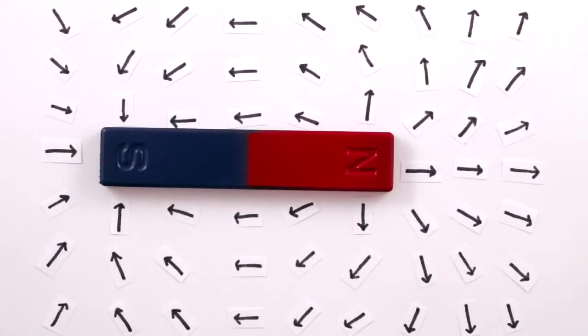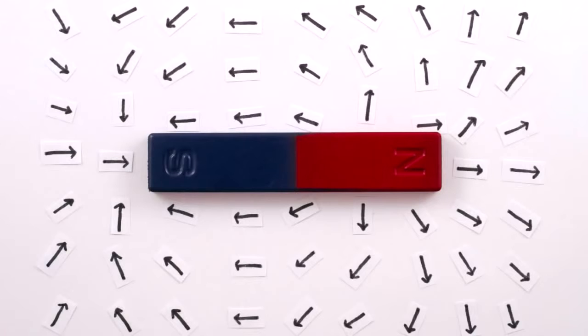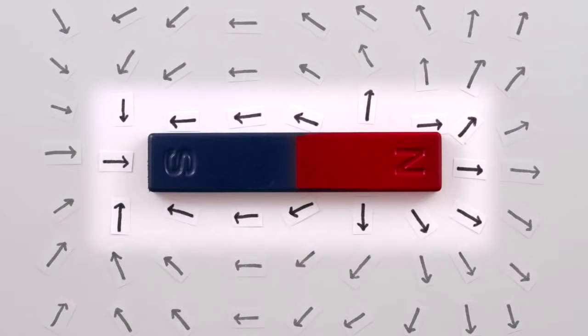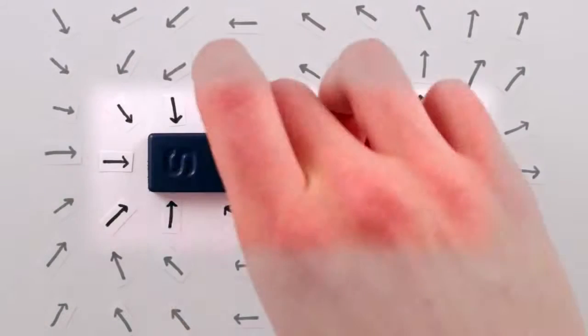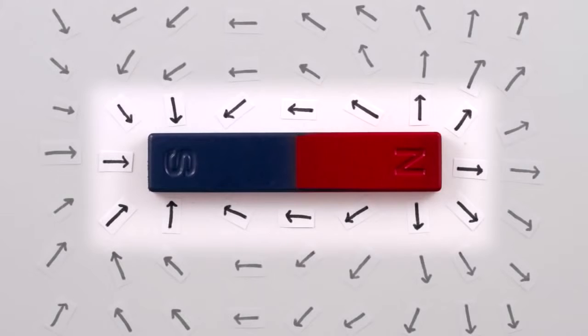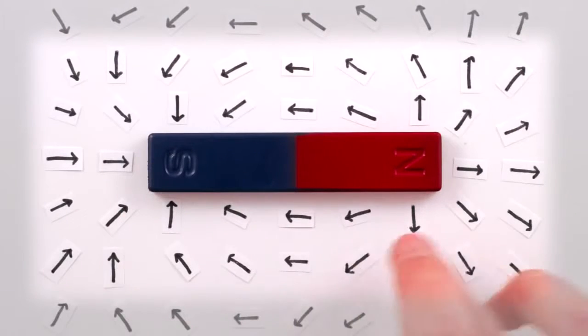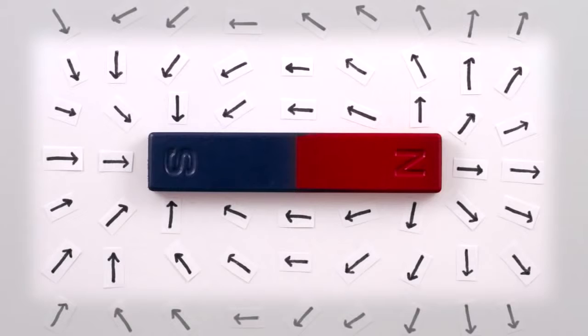For example, a magnet generates a disturbance in the field that looks like a magnetic field. And when you move the magnet, Maxwell realized that the bits of the field close to the magnet will change because the magnet changed its position.